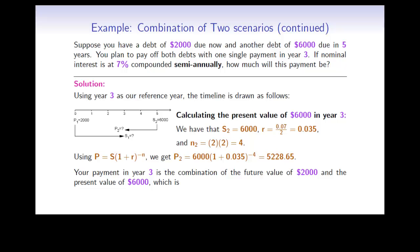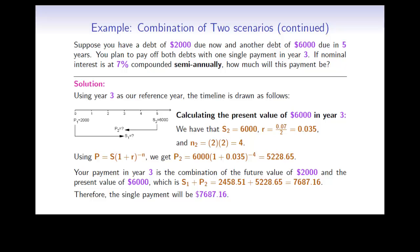Your payment in year 3 will be a combination of the future value of the $2,000 and the present value of the $6,000 — in other words, S1 plus P2. This equals $2,458.51 plus $5,228.65, which adds up to $7,687.16. Therefore, the single payment to pay off your two debts in one shot will be $7,687.16.